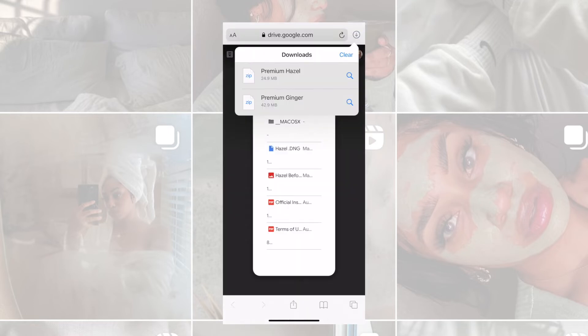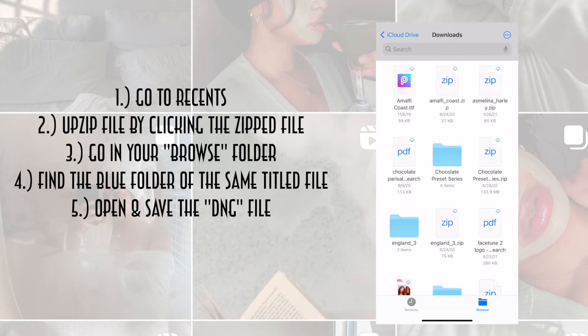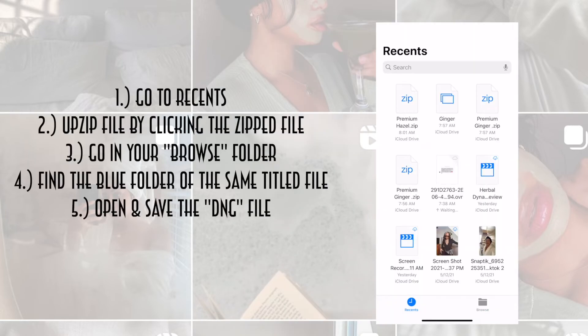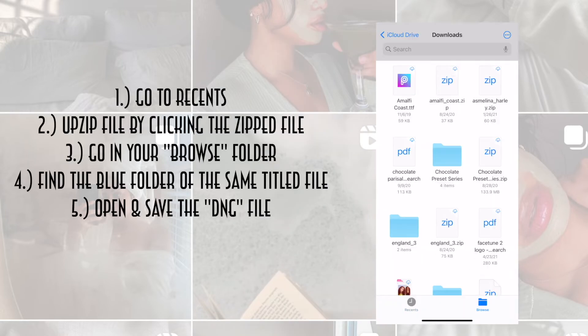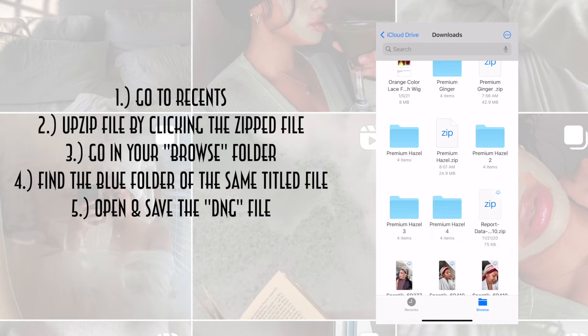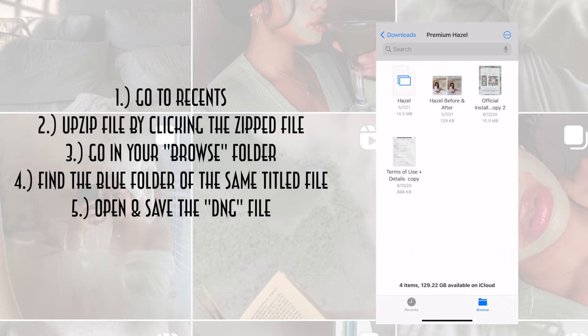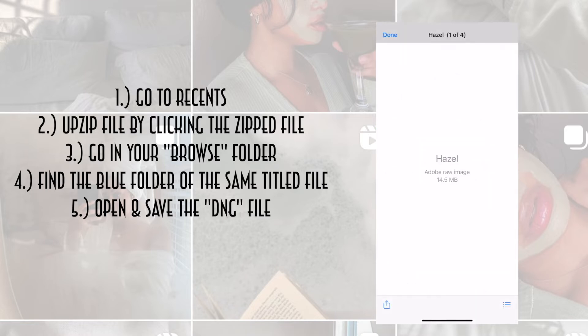If you don't have a Files app, please download one so it can download. Go to your Recents, unzip the file by clicking it one time, then go back to the Browse folder and find that Hazel file.